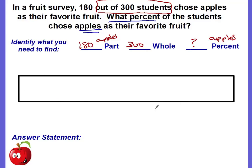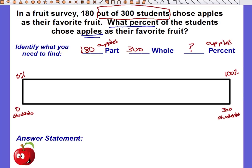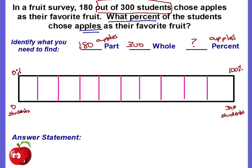Step one: the bar is already drawn. We put zero percent on the left and 100 percent on the right. Along the bottom, we're talking about students surveyed, so zero students on the left and 300 students on the right. Step two: partition the bar into 10 equal parts. Draw a line in the center, then four lines before it and four lines after it.